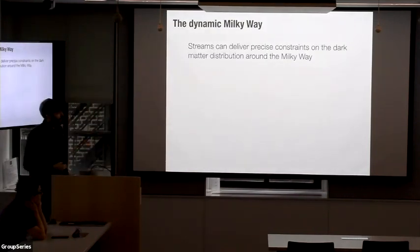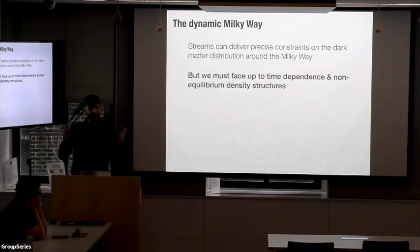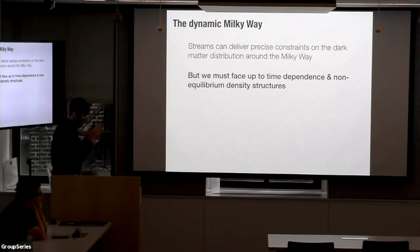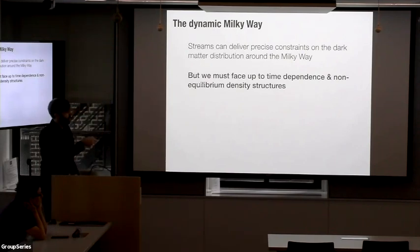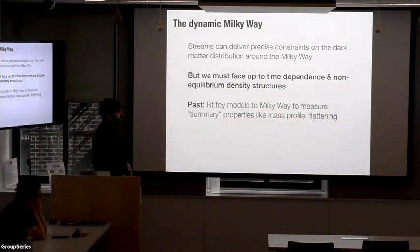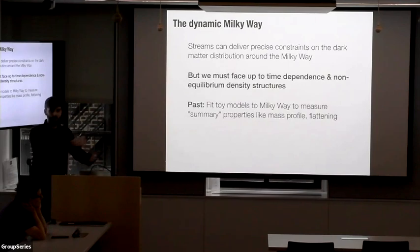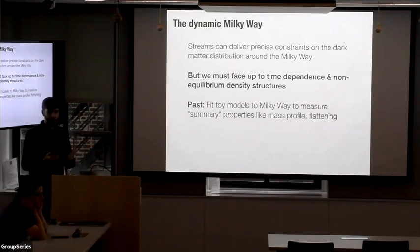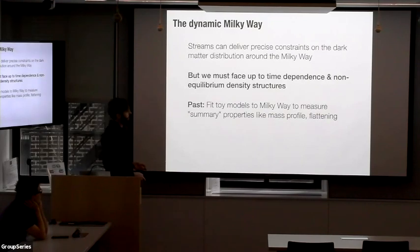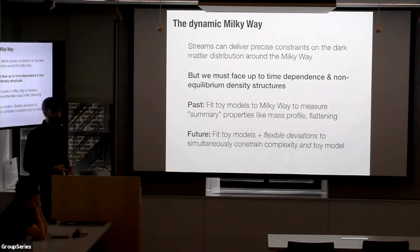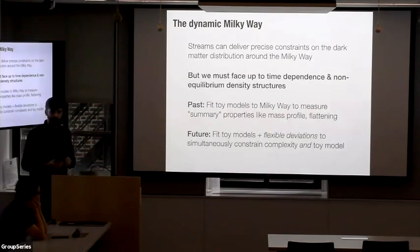So while I showed that streams can in principle deliver very precise constraints on the dark matter distribution — at least in the context of toy models — that was all a joke in a sense, because we know things are much more complex. We see time dependence in the inner parts of the galaxy, we see perturbations from satellites in the outer parts. So if we want to actually make progress on this, we really need to face up to including time dependence and non-equilibrium structures into the modeling. In the past, a lot of people fit these toy models — like those you can read out from chapter three of Binney and Tremaine — and hoped those were telling us robust measures of the summary properties we want, like the mass profile and the flattening.